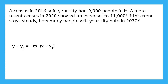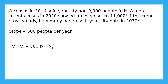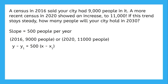First, let's use the points to find the slope. The city's population increased by 2,000 people in a span of four years, so that's 500 people per year. Now that we have the slope, we can use either point for x₁ and y₁ — either the fact that in 2016 there were 9,000 people, or that in 2020 there were 11,000. Since both results will really just end up being the same equation, we can just focus on using the first point.